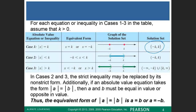For the inequality case with less than, the solution is in the middle of the number line. For case 3 with greater than, the solution goes to the left and to the right of the number line — a disjoint interval — and we use the union symbol U to connect the two intervals.